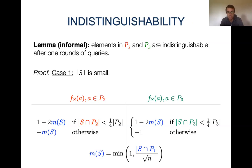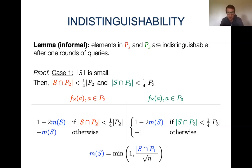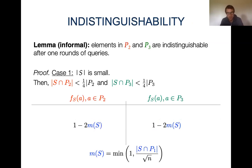In the first case, the queried set S is small. If the set is small, we will have a small number of elements from P2 and P3 in that set. Looking at the definition of the marginal contribution, we see the contribution of elements in P2 and P3 is 1 minus 2 times the masking function. This is the same for both P2 and P3, so they are indistinguishable.